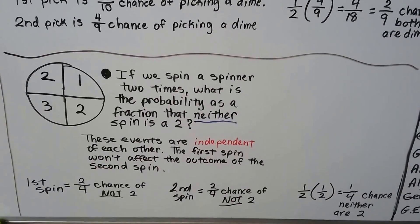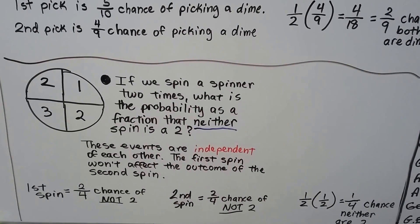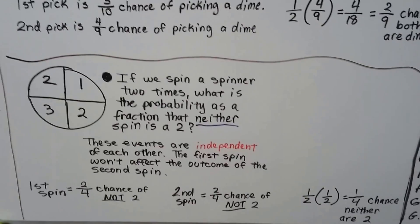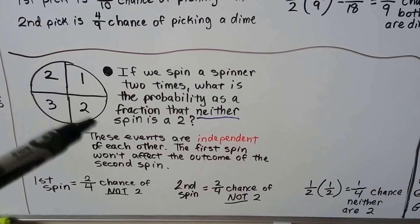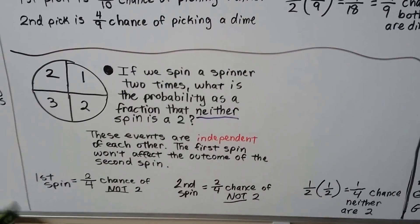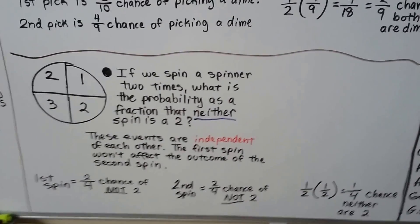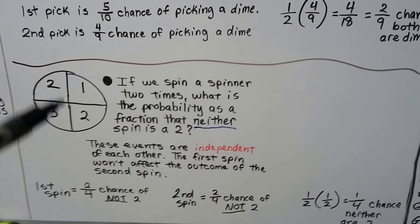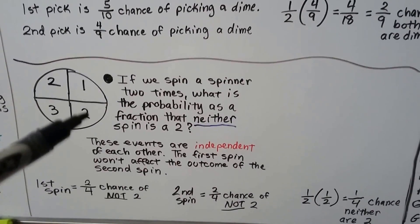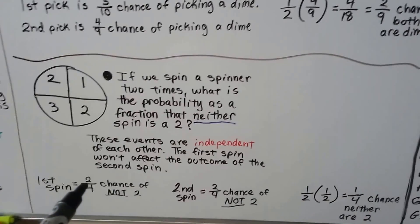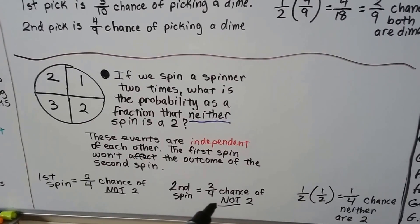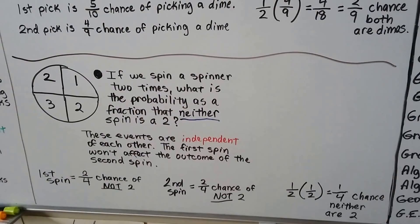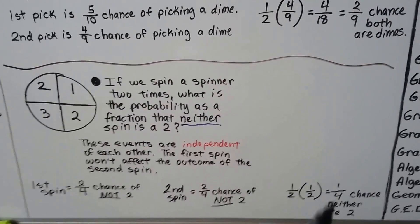Now we have a spinner. If we spin a spinner two times, what is the probability as a fraction, see how important it says, as a fraction, that neither spin is a two? Well, there's only four sections. Two of them are twos, and two of them aren't. So really, the probability of not getting a two and getting a two is the same, because there's only four sections. You've got a two-out-of-four chance of not getting a two, and you've got a two-out-of-four chance of getting a two. We can do the first spin and reduce that to a half. We can do the second spin and reduce that to a half. And we can multiply them together and get one-fourth chance that neither are two. Just multiply them together. Make sure you reduce them.